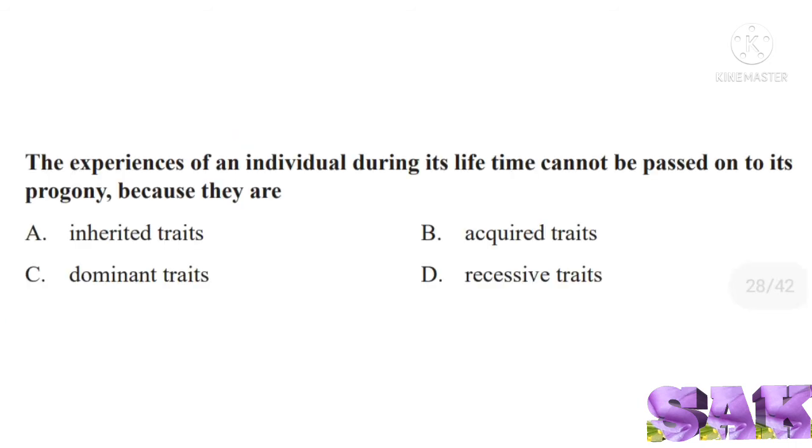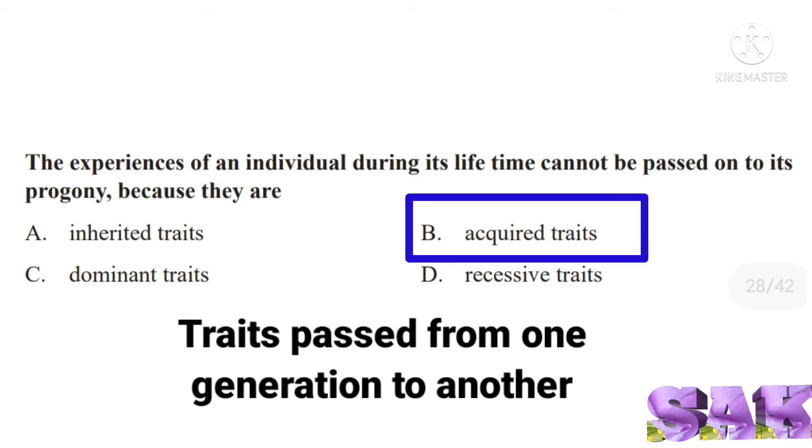Next question: the experiences of an individual during its lifetime cannot be passed on to its progeny because they are. Correct answer for this question is option B, acquired traits. Traits which are passed from one generation to another are called inherited traits.